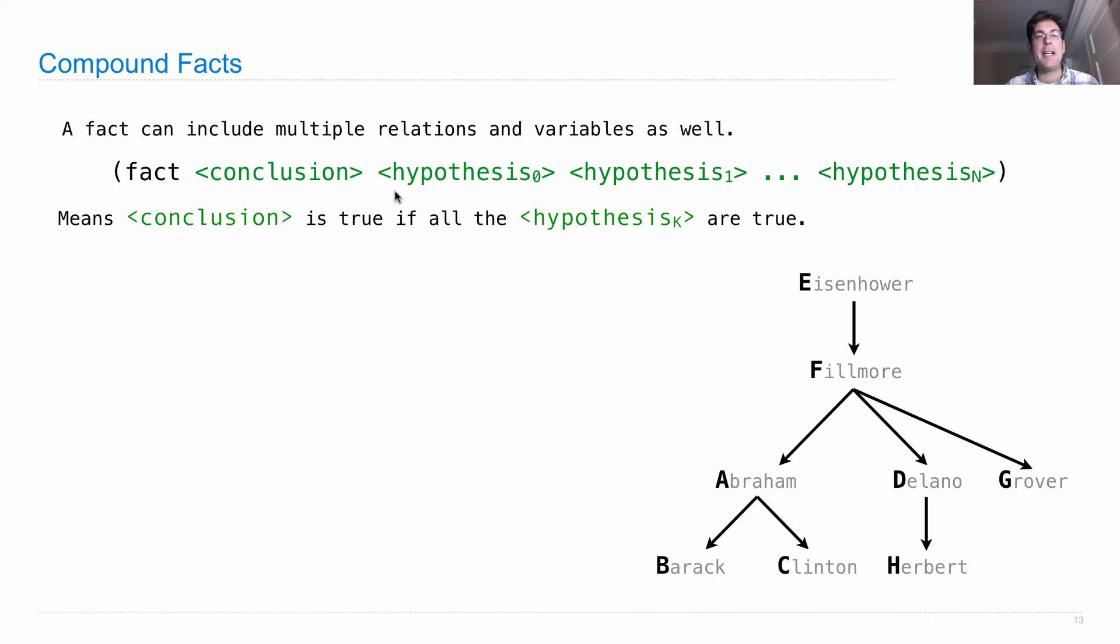When we didn't have any hypotheses, it was just stating that the conclusion was in fact true. Fact. John likes dogs. But if you have hypotheses, then the conclusion isn't true unless all the hypotheses are true.